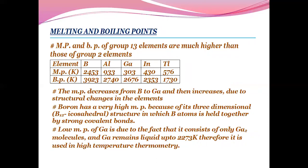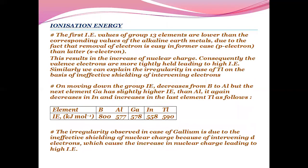Melting and boiling points of group 13 elements are much higher than those of group 2 elements. The melting point decreases from boron to gallium and then increases due to structural changes. Boron has a very high melting point because of its three-dimensional icosahedral structure in which boron atoms are held together by strong covalent bonds. Low melting point of gallium is due to the fact that it consists of only Ga2 molecules.